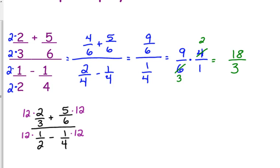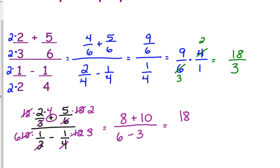Then I'm going to simplify each of them individually. 12 over 3 reduces to 4, so really I've got 2 times 4, which is 8. 12 over 6 reduces to 2, so I've got 5 times 2, which is 10. There was a plus right there in between those. On the bottom, 12 over 2 reduces to 6, 6 times 1 is 6. Minus 12 over 4 reduces to 3. And I get 18 over 3.